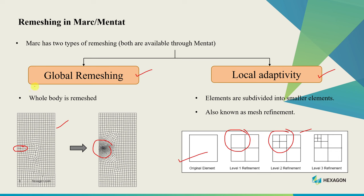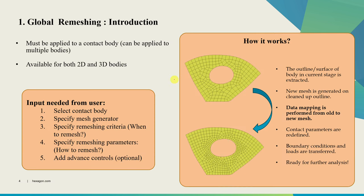In this tutorial we are going to cover only global remeshing. I will put out a separate video for local adaptivity. Before we go into the example, I just wanted to give a brief overview of how global remeshing works in Mark. We have to define a contact body for global remeshing to take place. It can be just one single contact body or multiple contact bodies, and it is available in both 2D and 3D. For global remeshing, the user can provide five inputs. First, the user has to specify which body to remesh — if your model has five or six bodies, you can choose which ones to remesh. Then you have to specify which mesh generator, since Markmentat has multiple mesh generators.